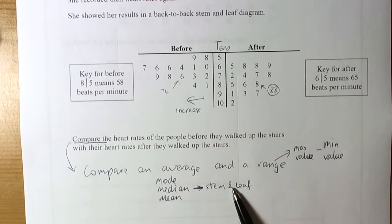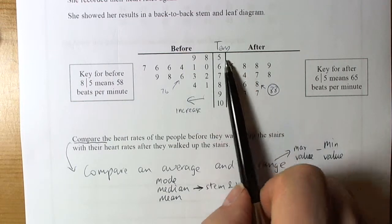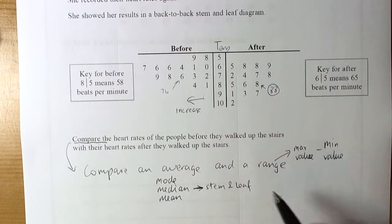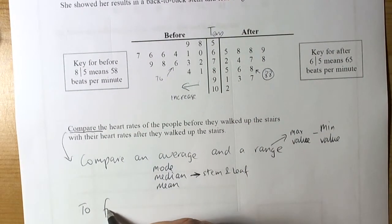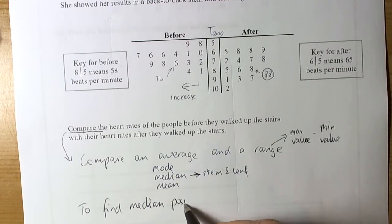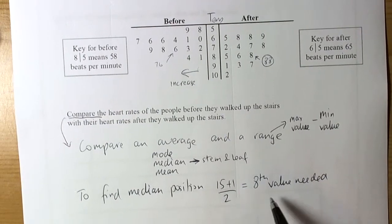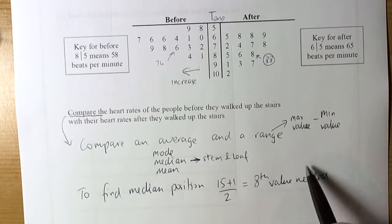So the median is the middle value when they're in size order. Well the stem and leaf diagram has already got the data in size order. And they're talking about 15 people. So to find the median position, so whereabouts the median value will be, then we do 15 plus 1 and have it. So 16, 8. So we're looking for the 8th value needed. Now this add 1 to the total frequency and have it will always tell you where the exact middle is.